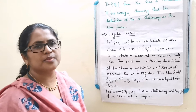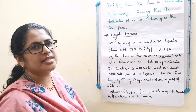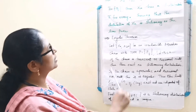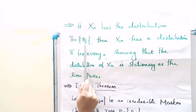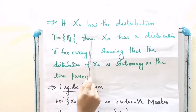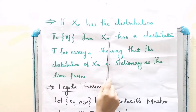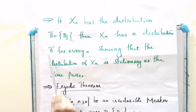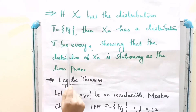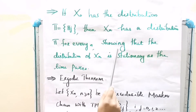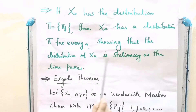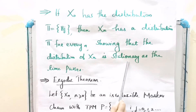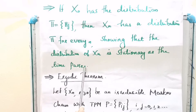Now we have some results related to stationary distribution. If X₀ has the distribution π = {πj}, then Xₙ has distribution π for every n, showing that the distribution of Xₙ is stationary as time passes.